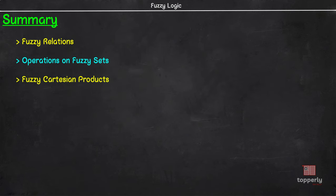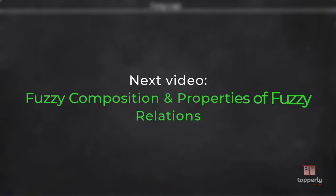That's all for this lecture. To summarize, we learned about fuzzy relations, operations on fuzzy sets and finally, fuzzy cartesian products. In the next video, we will learn about fuzzy compositions and properties satisfied by fuzzy relations.